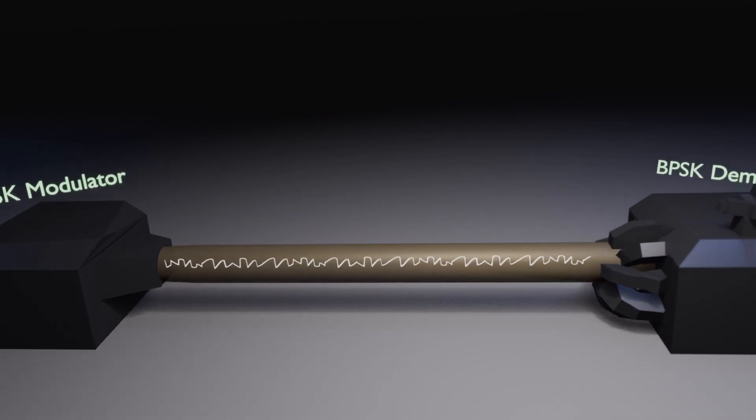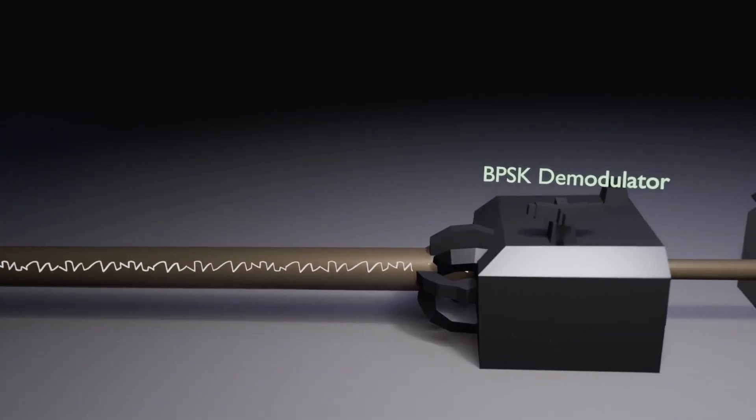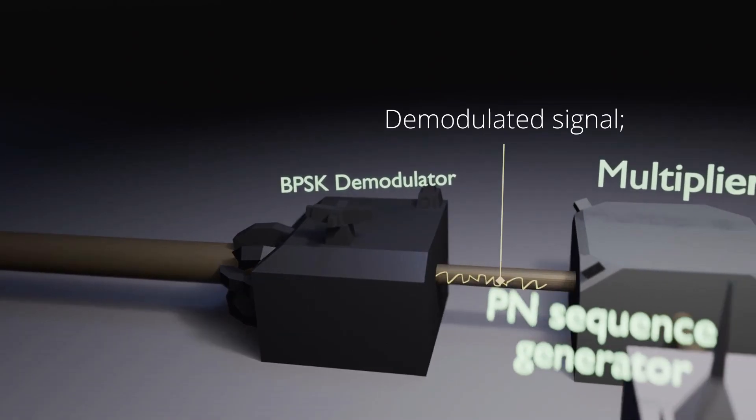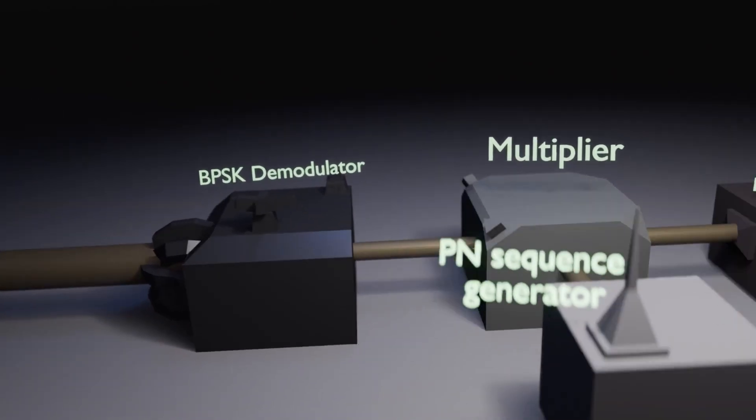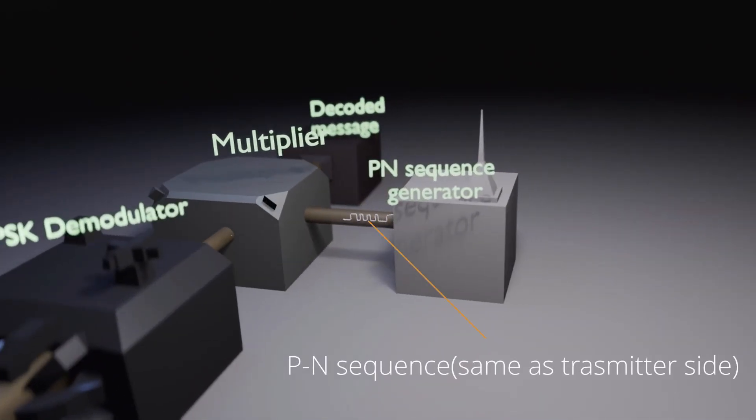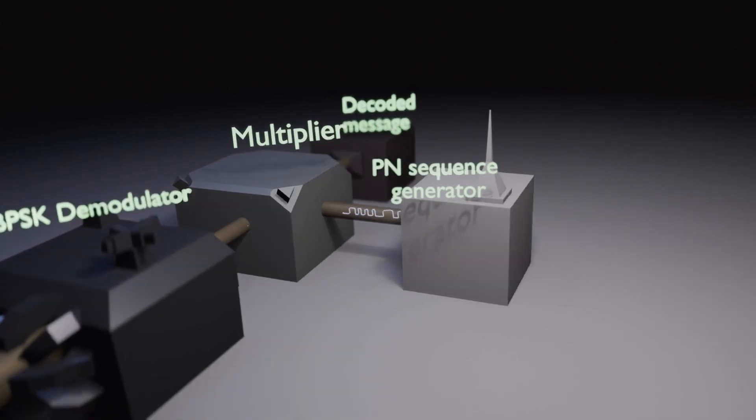At the receiver side, the signal is demodulated by the BPSK demodulator. The demodulated signal is then multiplied with the same PN sequence signal to get the original message.